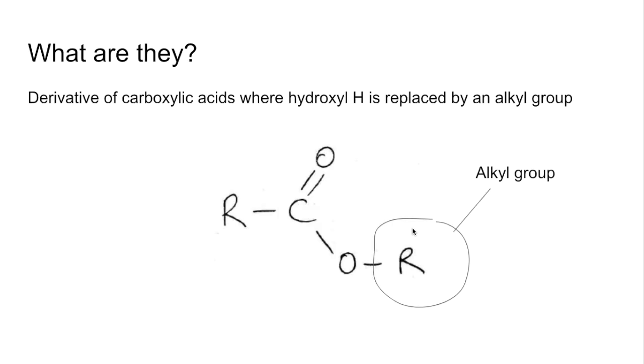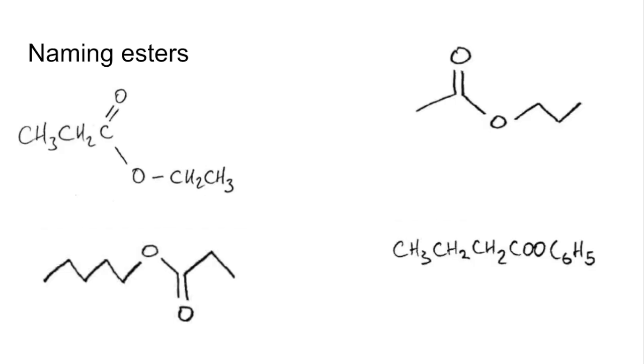Do a quick naming exercise. So starting at the top left hand corner, what's this ester called? Well we name this part first. So this is an ethyl group and then we go to this part. Three carbons here. So that's propanoate. So ethyl propanoate.